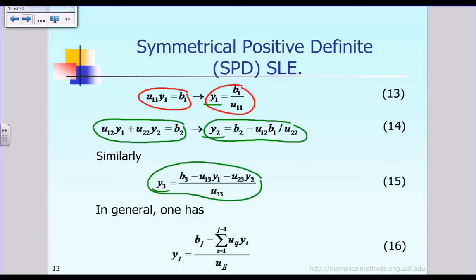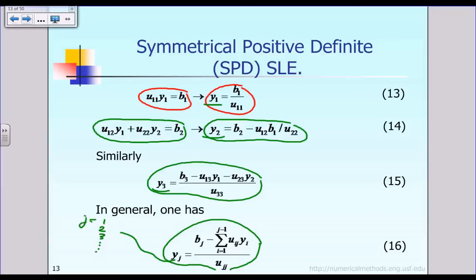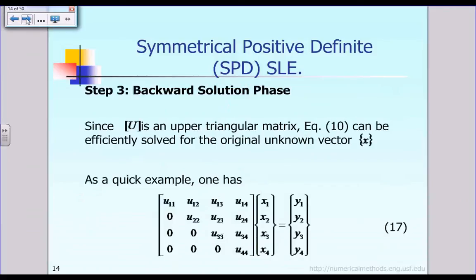In case your matrix is bigger than 3×3 or 4×4, equations 13, 14, and 15 can be written in the more general form as equation 16. Equation 16 can solve for any variable yj, where j could be 1, 2, 3, and so on. If you let j equal to 3, equation 16 becomes the same as equation 15 for the 3×3 case. By the end of step 2 — the forward solution phase — we have solved all the intermediate vector y values.